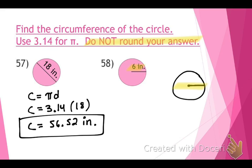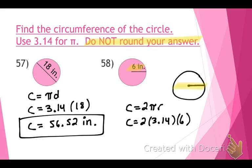The next circle shows 6 inches. Is that the radius or the diameter? Radius — you can tell because it's exactly half the length across the circle. The formula for circumference using a radius is C equals 2 pi r: C equals 2 times 3.14 times 6 equals 37.68 inches.